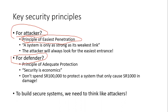The second principle is security economics. This means if your asset is worth 1000 riyals and the security costs 100,000 riyals, you would not spend that much on security. Security spending must be proportional to the value of your assets. For a 1000 riyal asset, you might spend around 100 to 150 riyals on security.